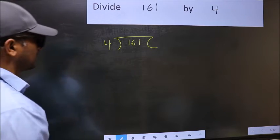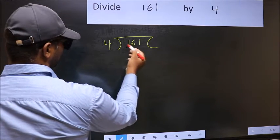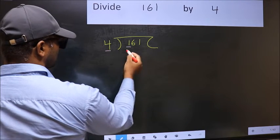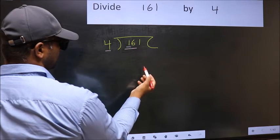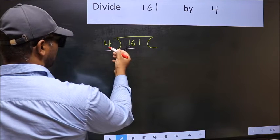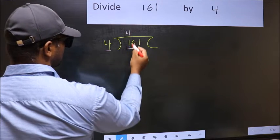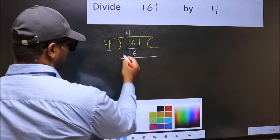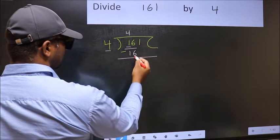Next, here we have 1, here 4. 1 is smaller than 4, so take 2 numbers: 16. When do we get 16 in the 4 table? 4 times 4 is 16. Now you should subtract. 16 minus 16 is 0.